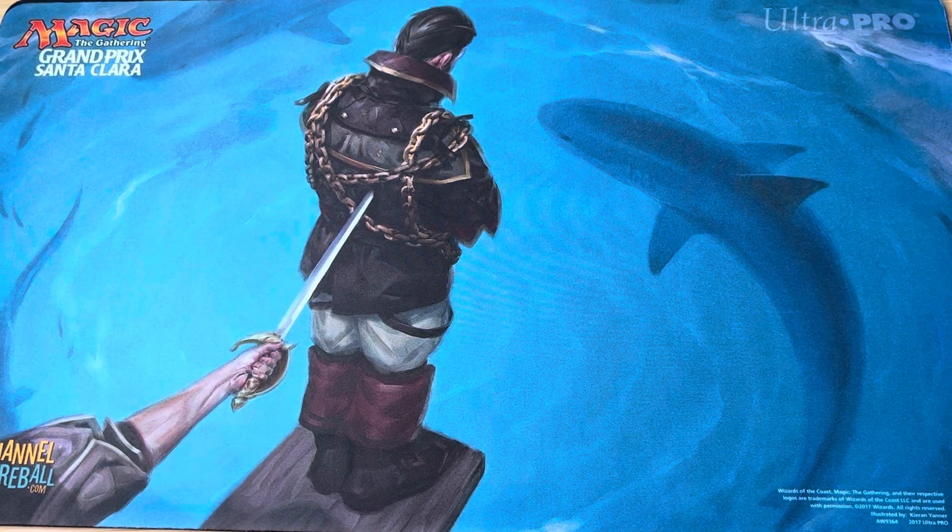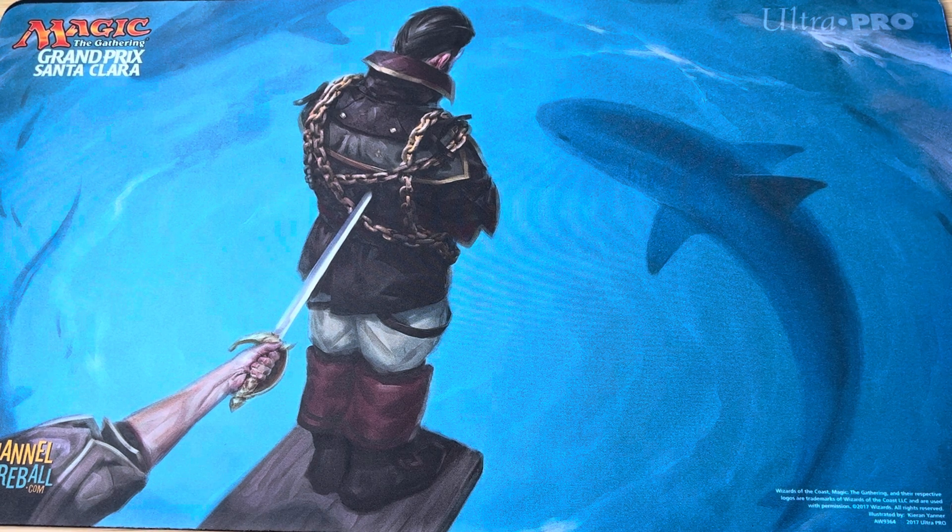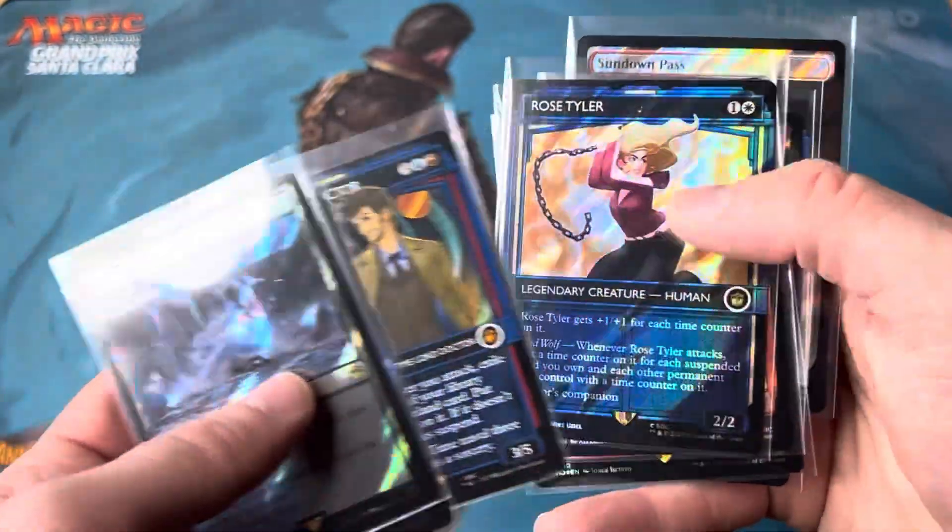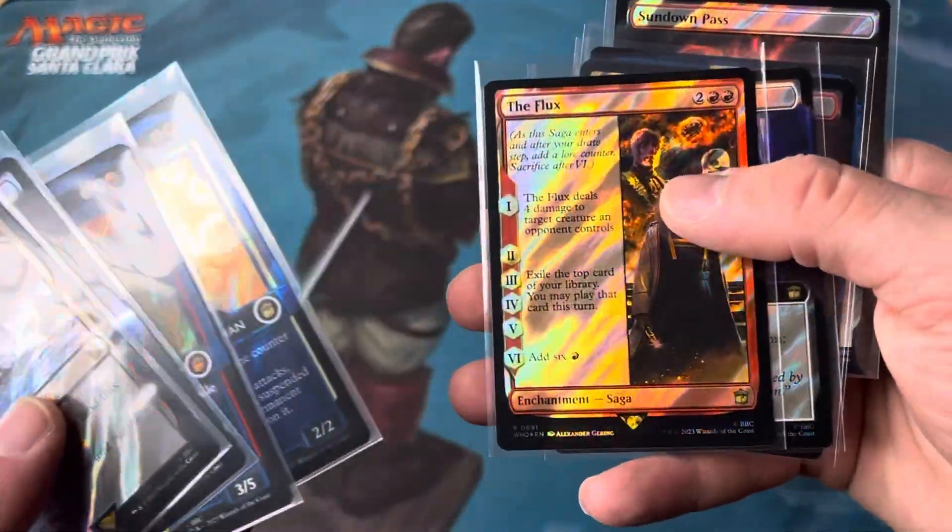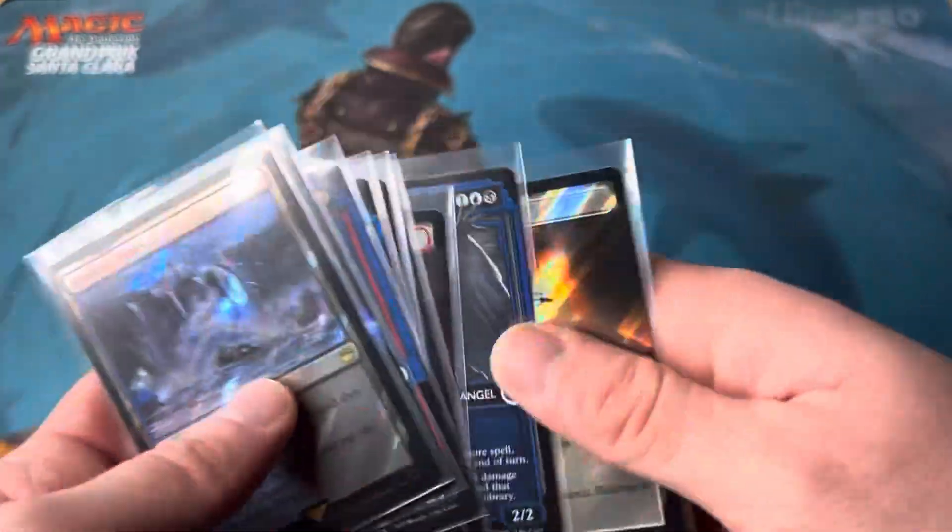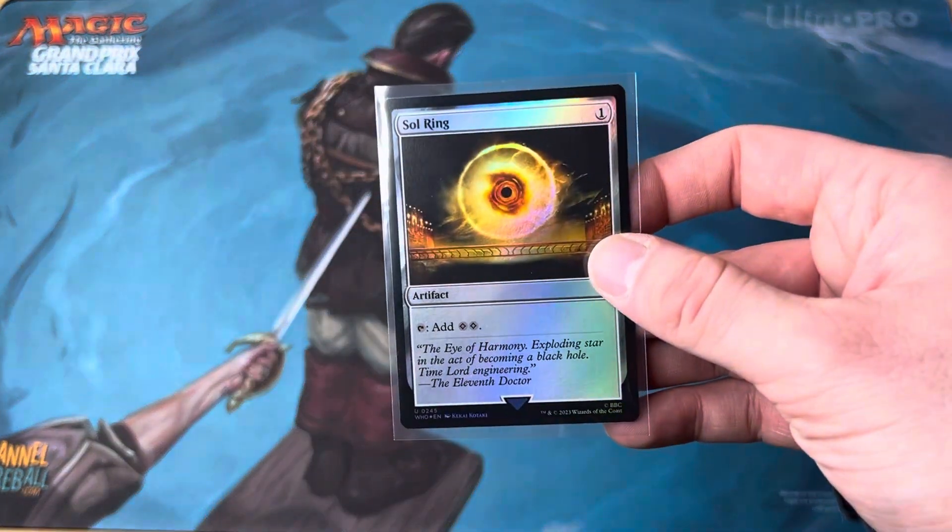We got some beautiful lands. We got the 10th Doctor. Rose Tyler. Flux. Some beautiful cards. A little weeping angel. And also this beautiful soul ring.